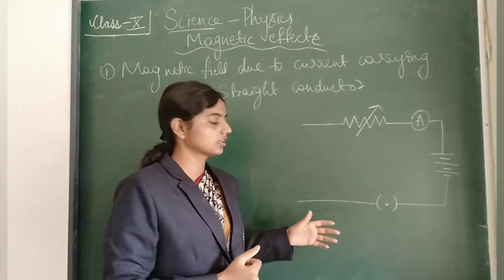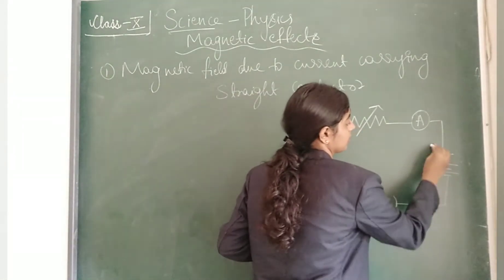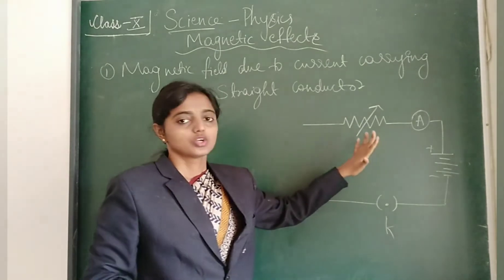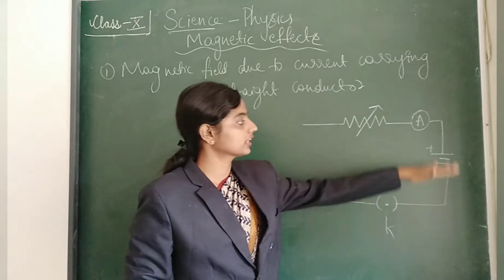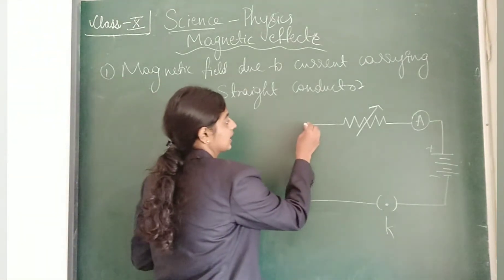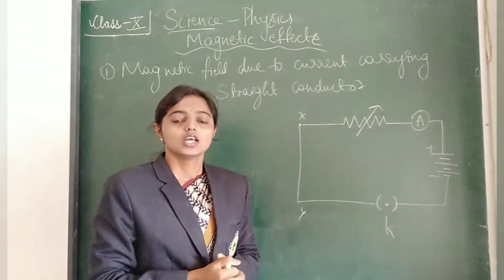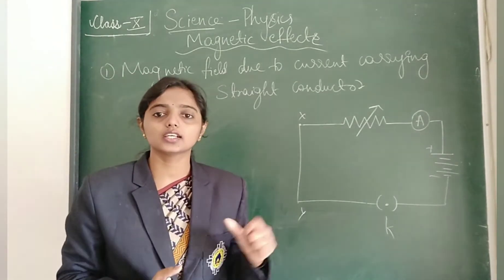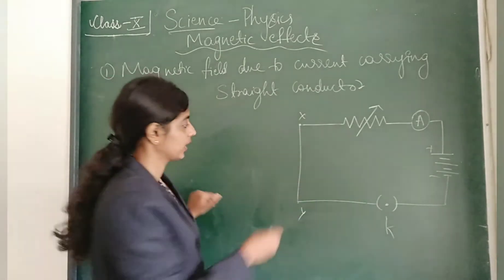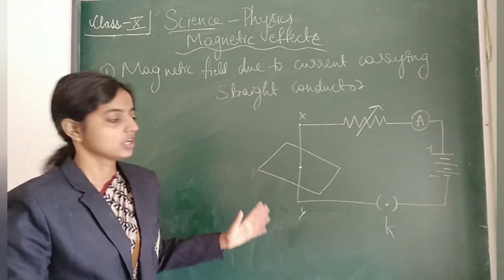First we need to make a circuit setup. Our electrical circuit contains a key, a battery, an ammeter, and a variable resistance which is fixed throughout the experiment. After connecting everything with connecting wires, we take an insulated copper wire connected between X and Y terminals — this is our straight conductor. The next step is to take a thick cardboard sheet and insert it through the middle, with the copper wire passing through the middle of the cardboard sheet.